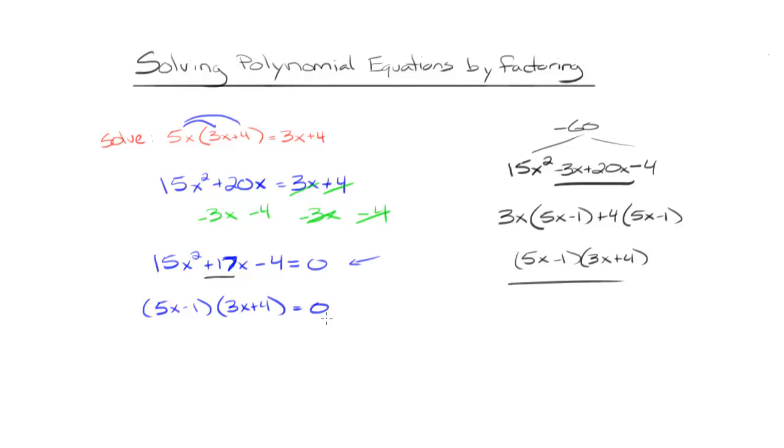Now that I've factored the left side, I set each factor equal to 0 to find the solutions. So I'm going to set 5x - 1 = 0 and 3x + 4 = 0, and solve these equations.